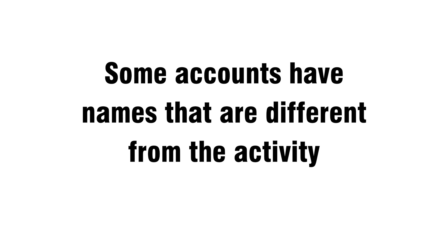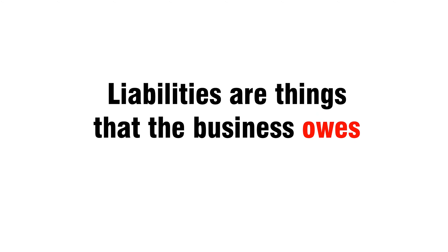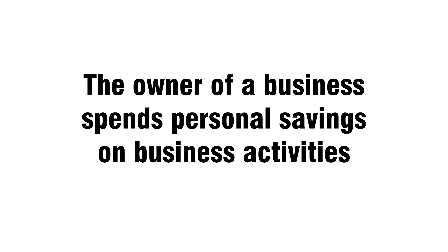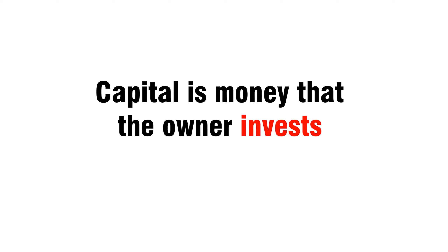Some accounts have names that are different from the activity. A business borrows money — liabilities are things that the business owes. Loan is a liability account that is used when money is borrowed. The owner of a business spends personal savings on business activities — capital is money that the owner invests.